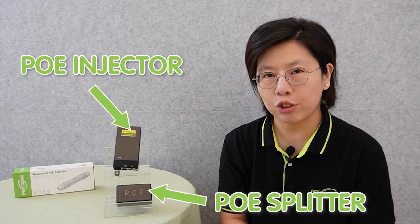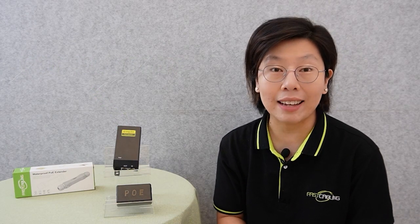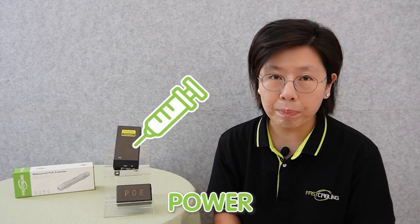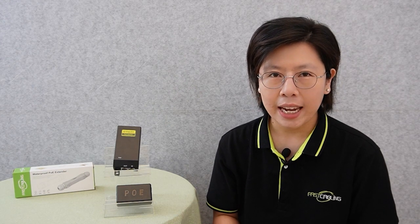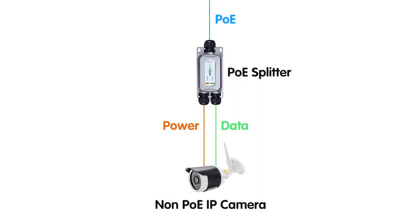Let's talk about PoE injectors and splitters. Think of a PoE injector as a power source — it injects power and transmits data over an Ethernet cable. The PoE splitter, on the other hand, does the opposite: it splits the power from the data, making it usable for non-PoE devices. This combination offers the flexibility to power and connect devices, both new and existing.